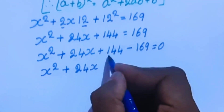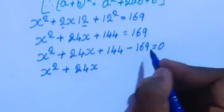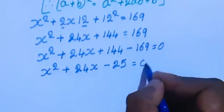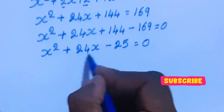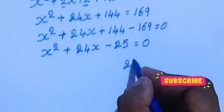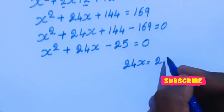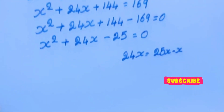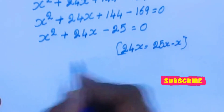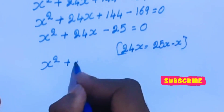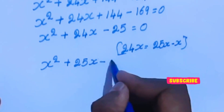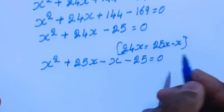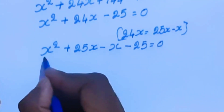Now 24x can be written as 25x minus x. So we apply this here: x square plus 25x minus x minus 25 equal to 0.